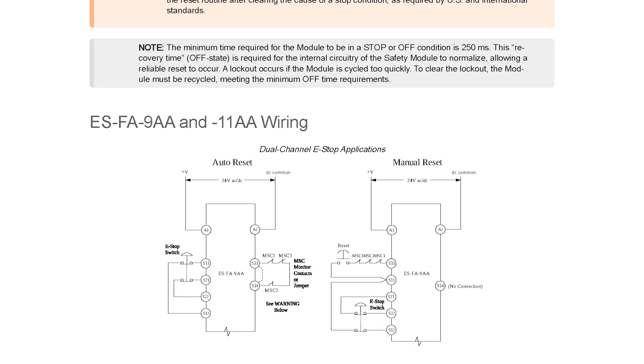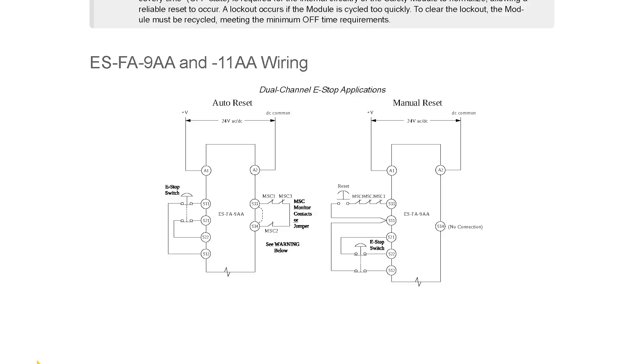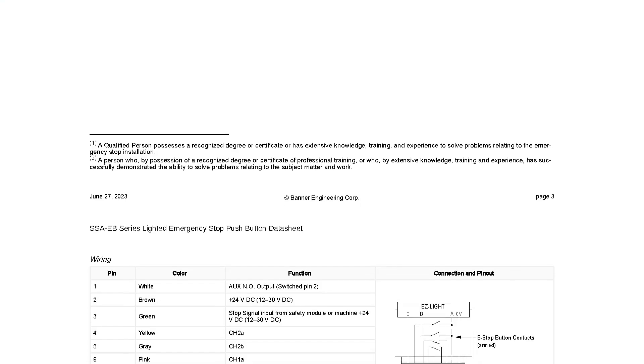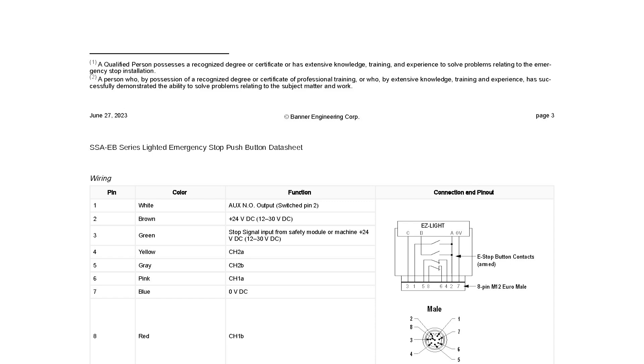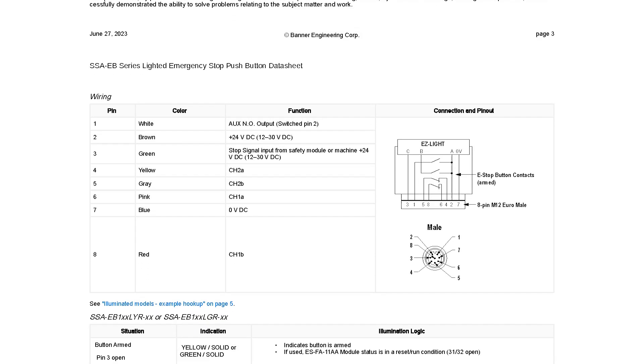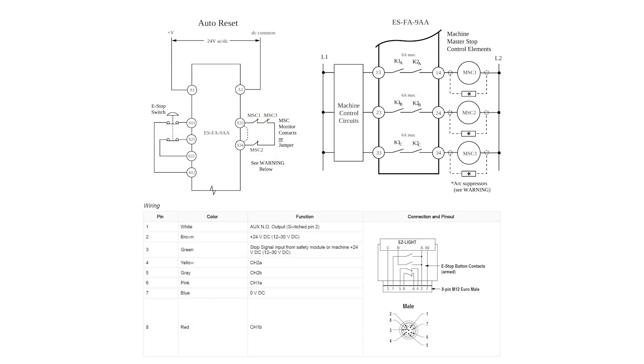Wiring diagrams for the modules can be found in the instruction manual and on the module label, while the pinouts for the e-stops may be found in the manual for your specific e-stop model. We will reference these diagrams throughout the process.